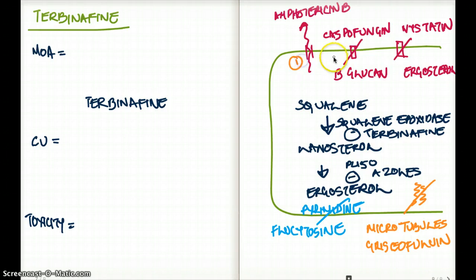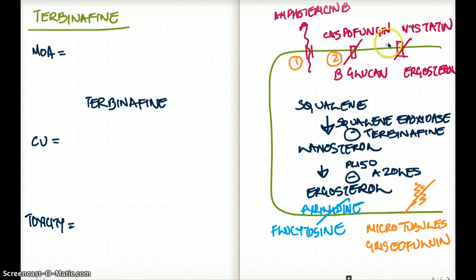The second one is caspofungin. There is a protein called beta-glucan which helps to make the cell membrane of the fungus. Caspofungin inhibits beta-glucan, therefore inhibiting cell membrane synthesis.